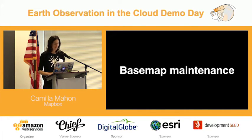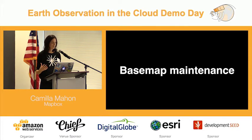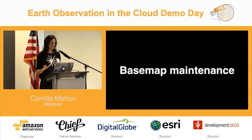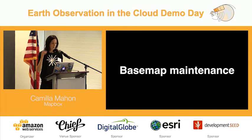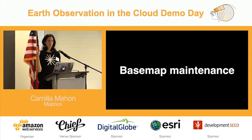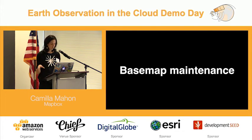Starting with base map maintenance — what does it mean to really publish a global base map? For us it means working with imagery from a bunch of different resolutions at different update frequencies, and imagery delivered in tons of different formats that requires different types of pre-processing. Building a global base map also means providing a view of the world from the most zoomed-out point of view — where you can see every continent — all the way to a really zoomed-in view where you can see individual buildings, roads, construction cranes, livestock, sheep in their fields.